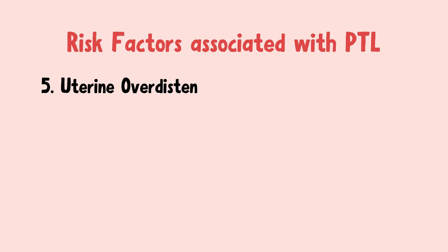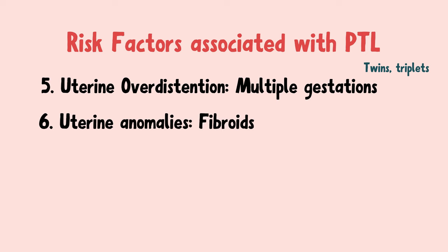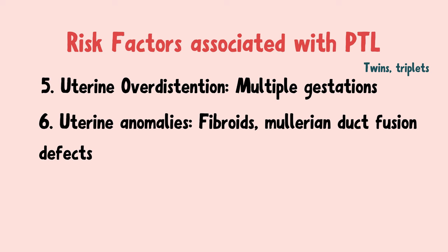Uterine over-distension caused by multiple gestations such as twins, triplets, etc., can lead to preterm labor. Uterine anomalies like fibroids and anomalies of the Müllerian duct fusion can cause preterm labor, as the uterus will not have enough space to accommodate the developing baby and will try to expel it as soon as possible.